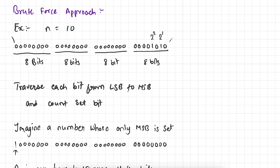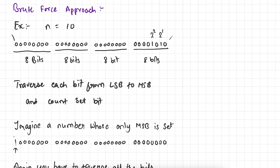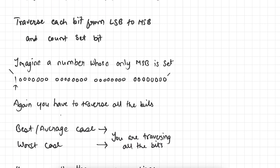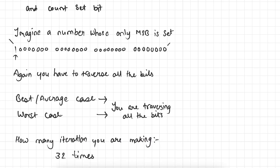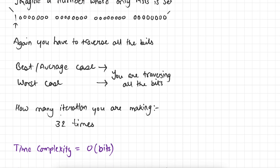But imagine a number whose only most significant bit is set. In this number only the most significant bit is set. In this case also you have to traverse from the least significant bit to the most significant bit. In both cases you are traversing all the bits to calculate the number of set bits. So in best case or average case also you are traversing all the bits, and in worst case also you are traversing all the bits. So if there are 32 bits in an integer, you are making 32 iterations to simply count the number of set bits.